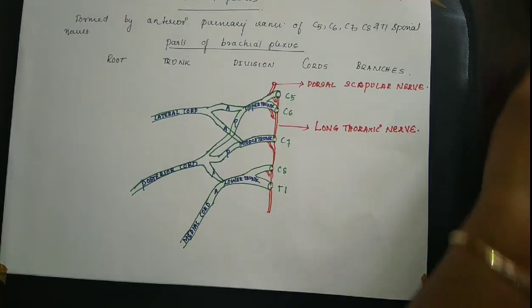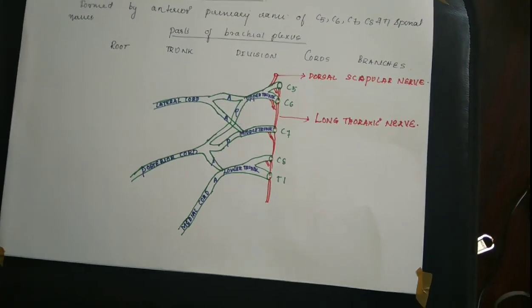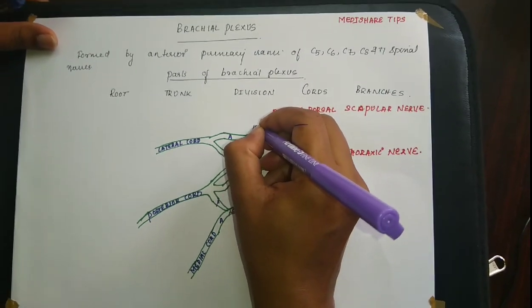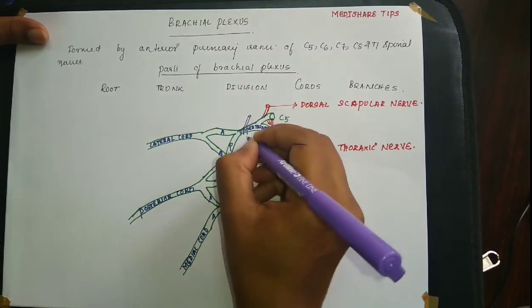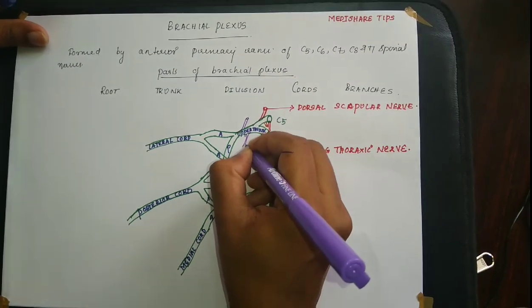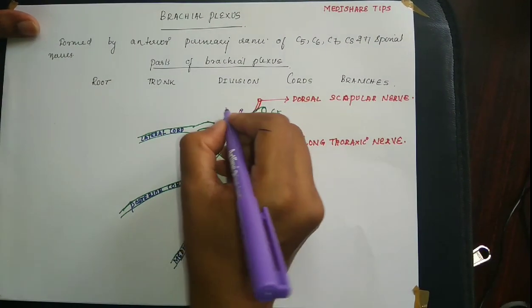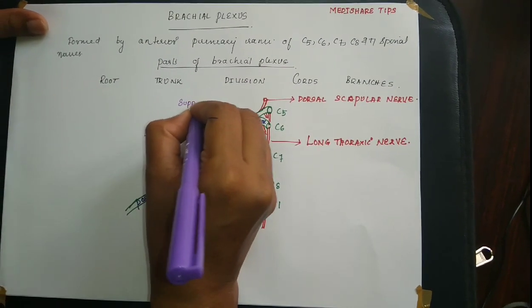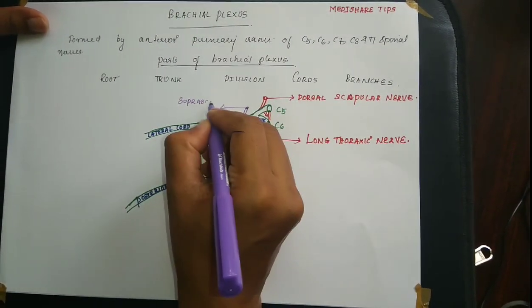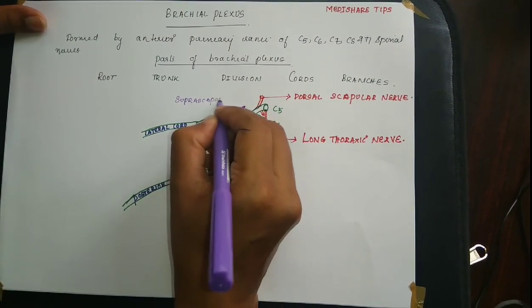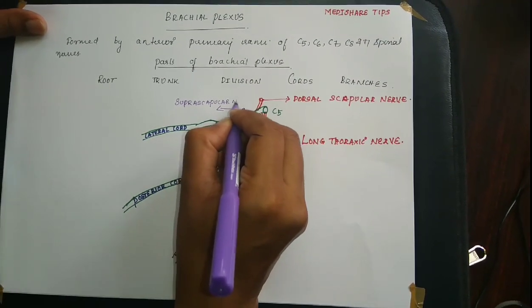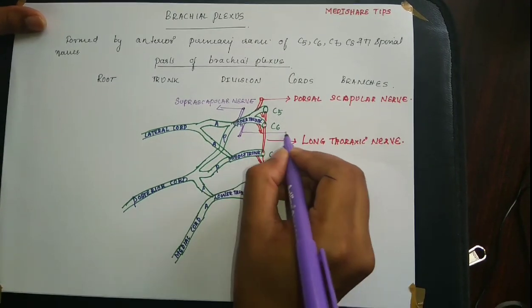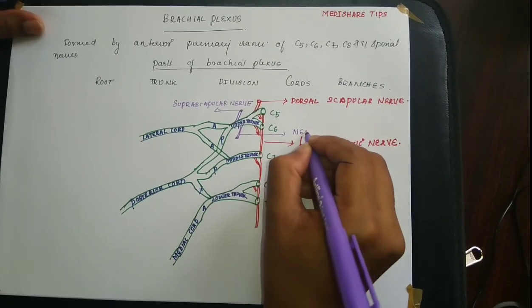Now let's discuss the branches arising from the trunk of the brachial plexus. From the upper trunk, two branches arise: one is the suprascapular nerve, and the other is the nerve to the subclavius.